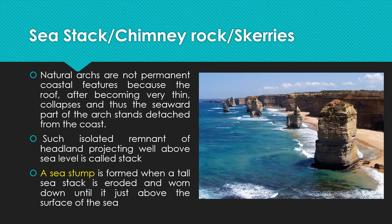The isolated portions projecting at sea level form the sea stack, chimney rock, or scories. A sea stump is formed when a tall sea stack is eroded and worn down until it is just below the surface of the sea. The sea stack undergoes continuous erosion until it reaches sea level, forming the sea stump.